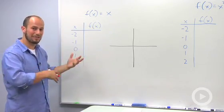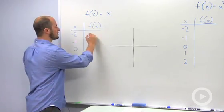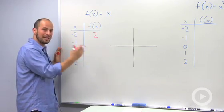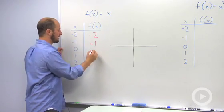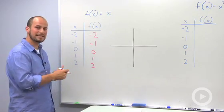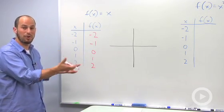...the same value comes out because f(x) is just equal to x, so this ends up being -2 as well. All these values are just going to go in and come out exactly the same, so we end up with -1, 0, 1, and 2. These then correspond to points on the graph.